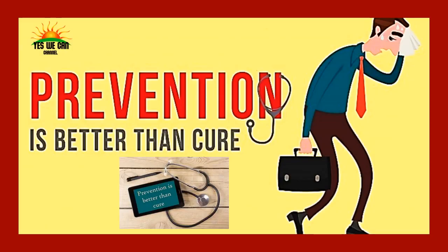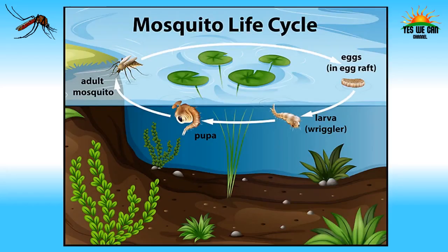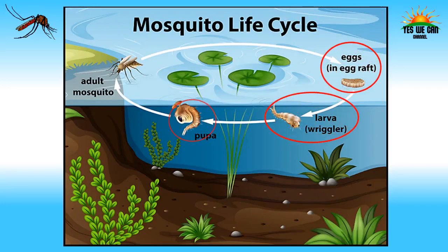Prevention is better than cure. Prevention means to avoid and cure means to correct anything that is troublesome. It is sensible to stop an illness from happening in the first place. While we can't completely avoid mosquito bites, some simple lifestyle changes can protect us. To understand preventive measures, we first need to understand the life cycle of mosquitoes. The mosquito goes through four stages: egg, larva, pupa, and adult.